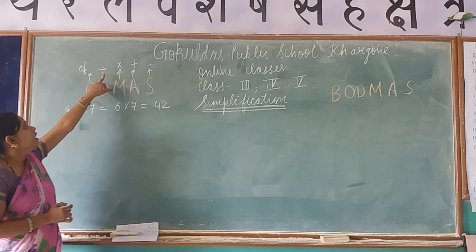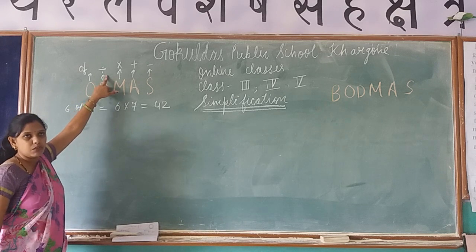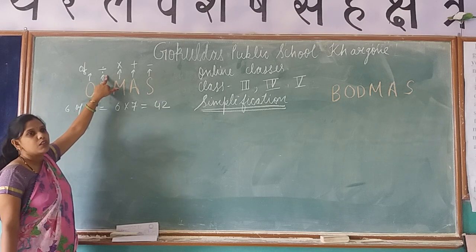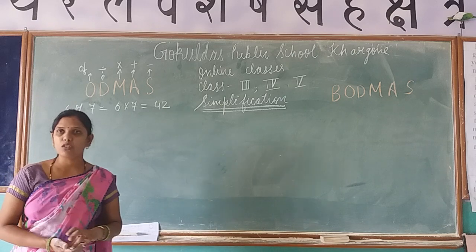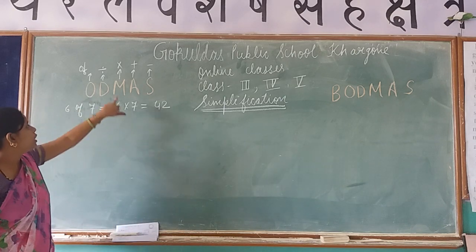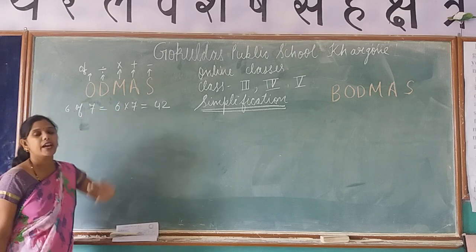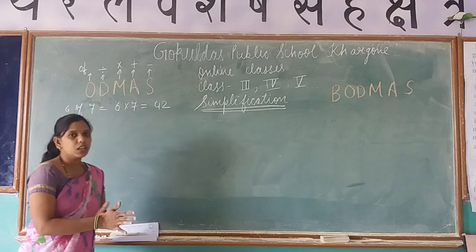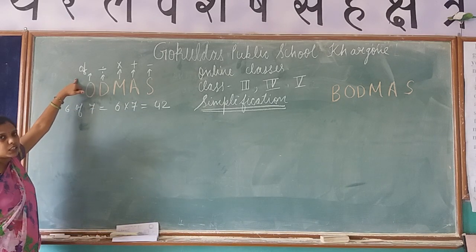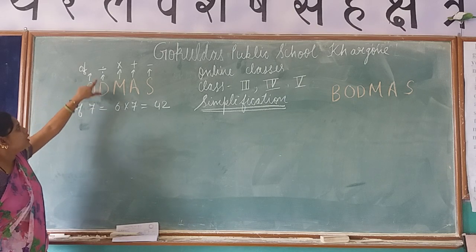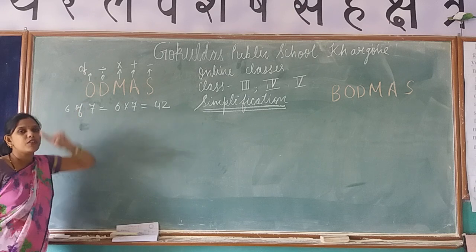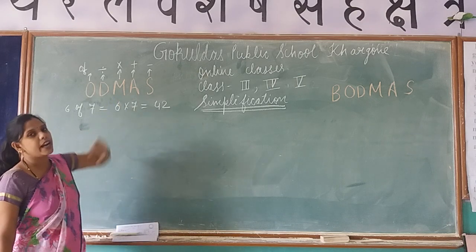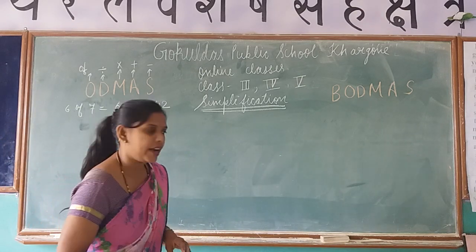The second step is D, meaning Division. If division is given in the question, our next preference goes to division. After dividing, if multiplication is also there, our next preference will be multiplication. Then we do addition, and at last we do subtraction. So the order is: Of, then Division, then Multiplication, then Addition, and at last Subtraction.